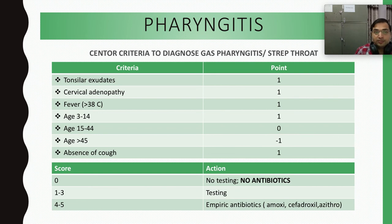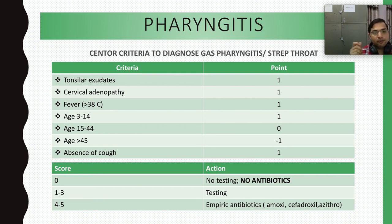How do we diagnose Group A Streptococcus pharyngitis, also called strep throat? Number one: tonsillar exudates — the reason could be viral or bacterial. In bacterial infection it is a creamish layer; in Epstein-Barr virus infection it is more of a pus nodule. Tonsillar exudates score one point.